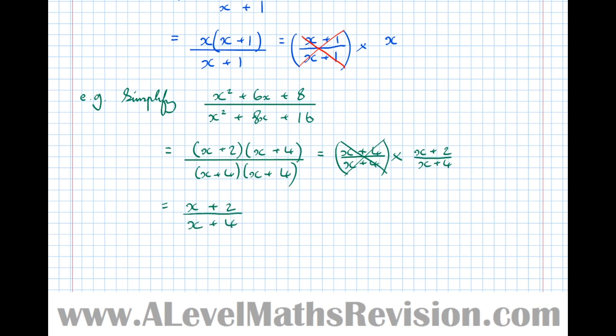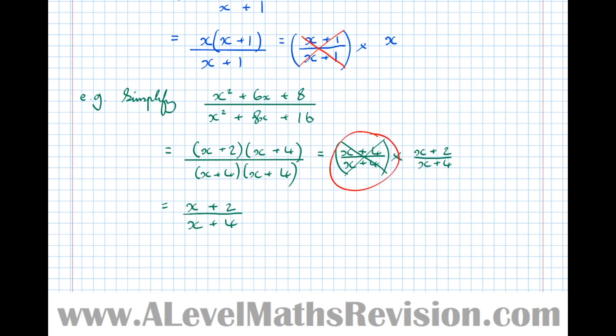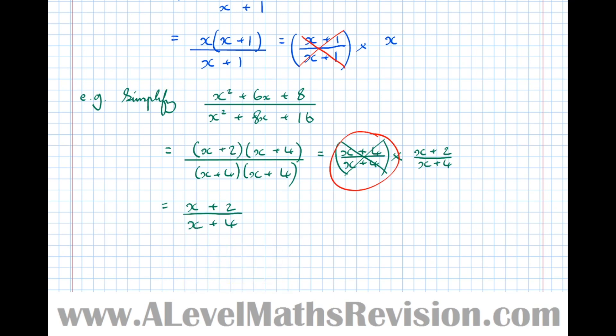A common error at this point would be to try and further simplify this correct answer by saying the x's cancel — but that's not the case. The only way we could do that is if at the front we could get an x over x times something. Then the x's would cancel because x over x is 1. Cancellation means a hidden multiple of 1. You've probably gathered by this point that factorisation is the key.